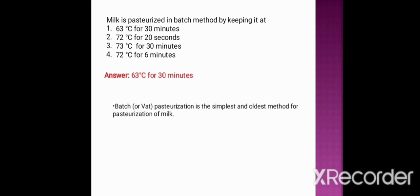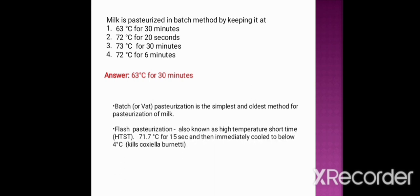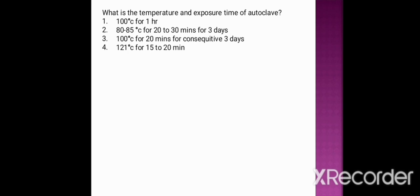The batch method is also known as the vat method or the holder method of pasteurization — the simplest and oldest method for pasteurization of milk. Whereas 72 degrees centigrade for 20 seconds is the flash method of pasteurization, also known as high temperature short time (HTST). It may also be 71.7 degrees centigrade for 15 seconds, immediately cooled below 4 degrees centigrade. The flash method of pasteurization is able to kill Coxiella burnetii.